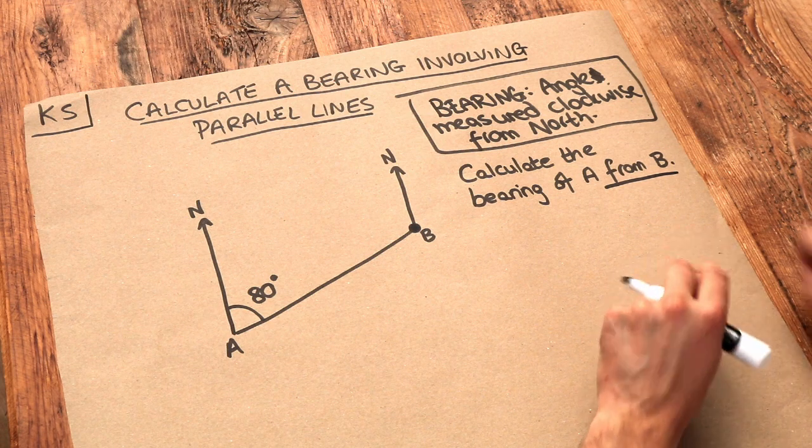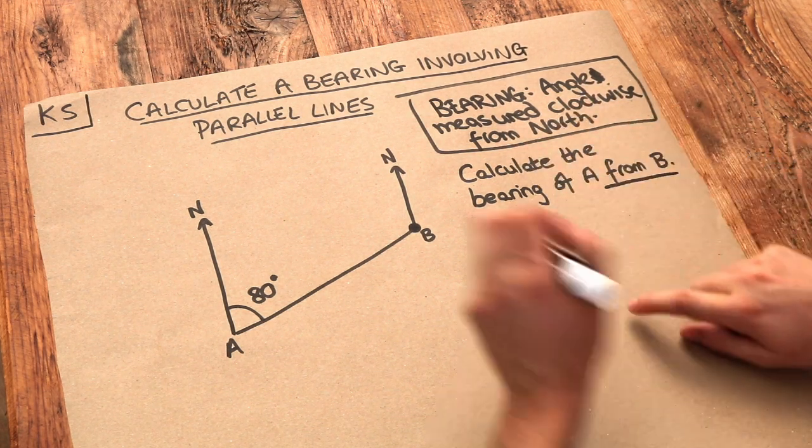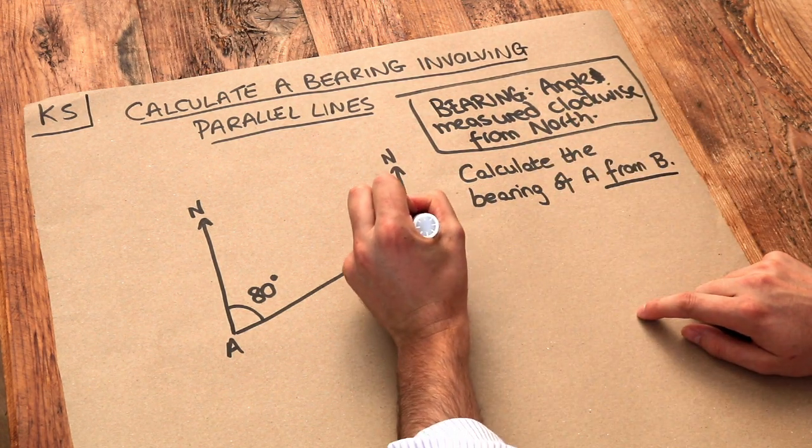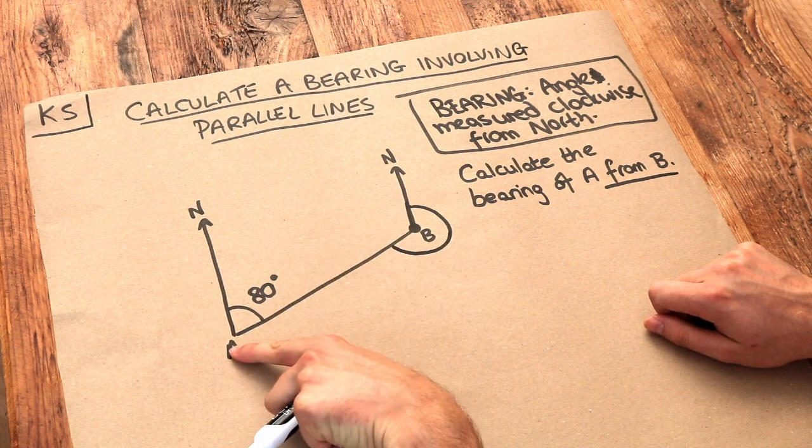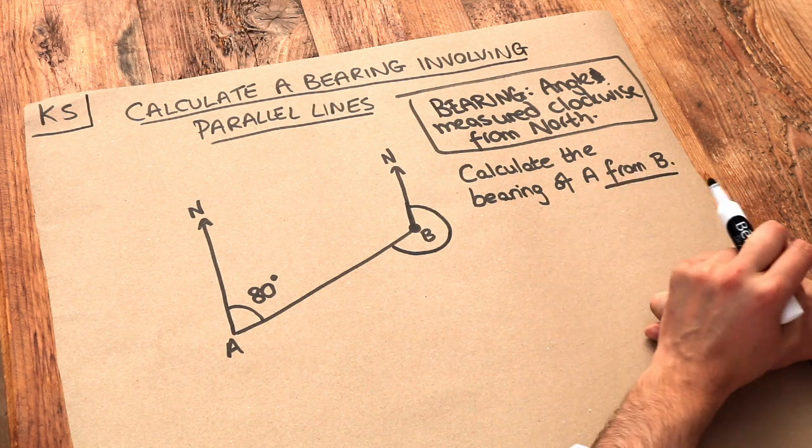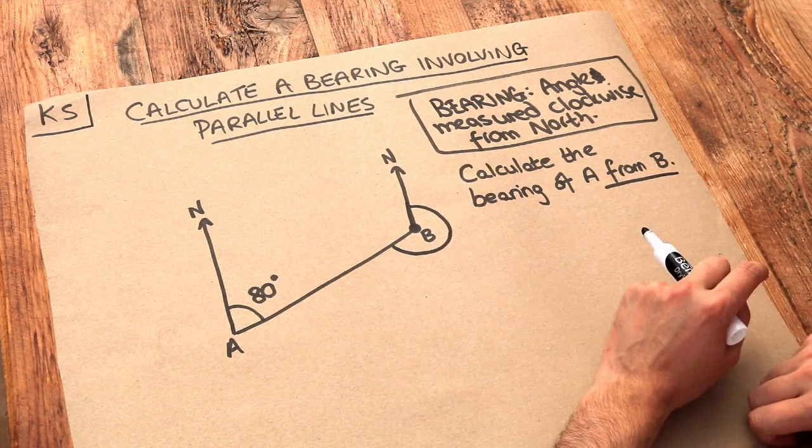And the bearing means the angle measured clockwise from north. So at B we're facing north and then we rotate clockwise from there until we're facing the other point, in this case A. So that is the angle that we want.